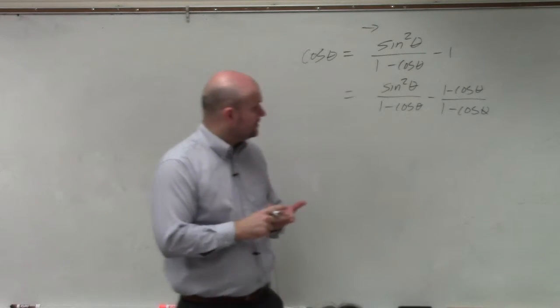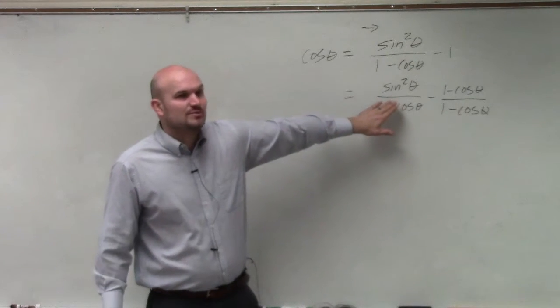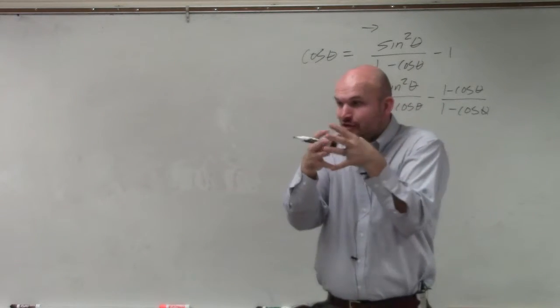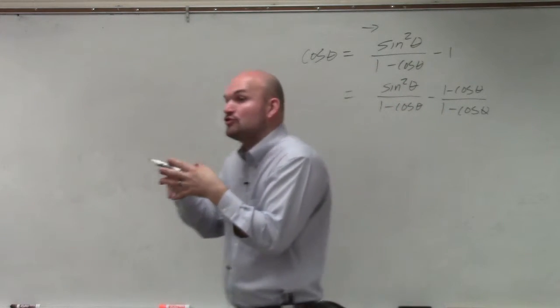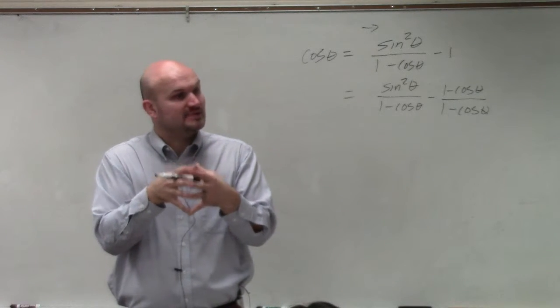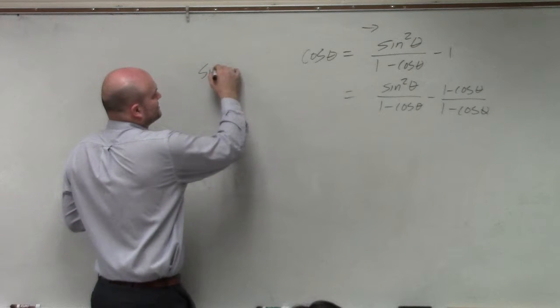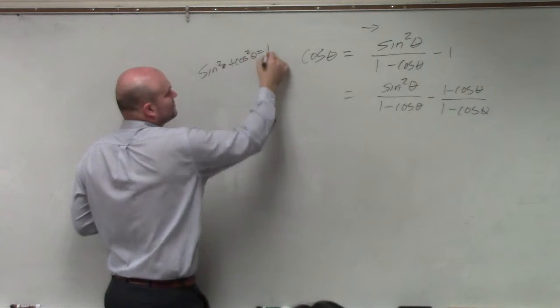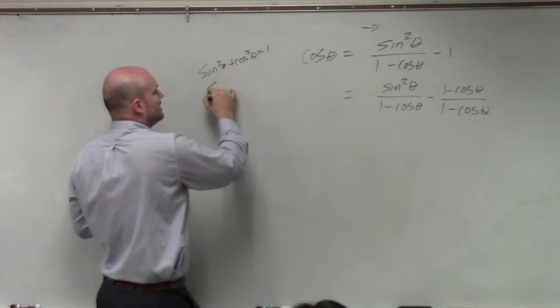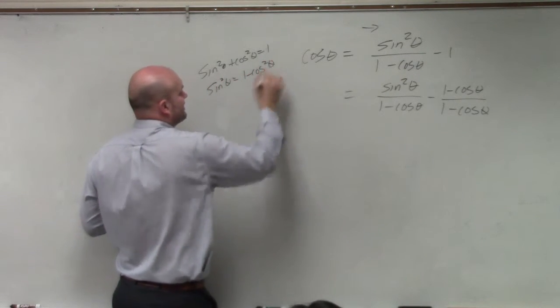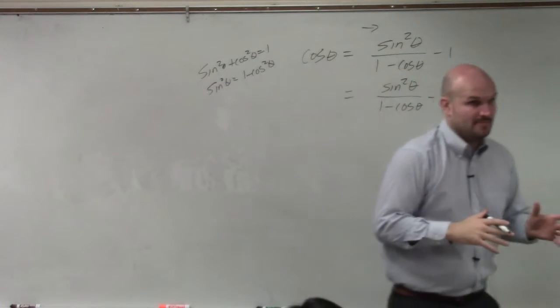But the other thing we can look at is I see a sine squared. And remember I told you to look through this. Any time you see a trigonometric function squared, try—it might not be right, but try using a Pythagorean identity. So we know sine squared theta plus cosine squared of theta equals 1. So sine squared is equal to 1 minus cosine squared of theta. Would you guys agree with me?